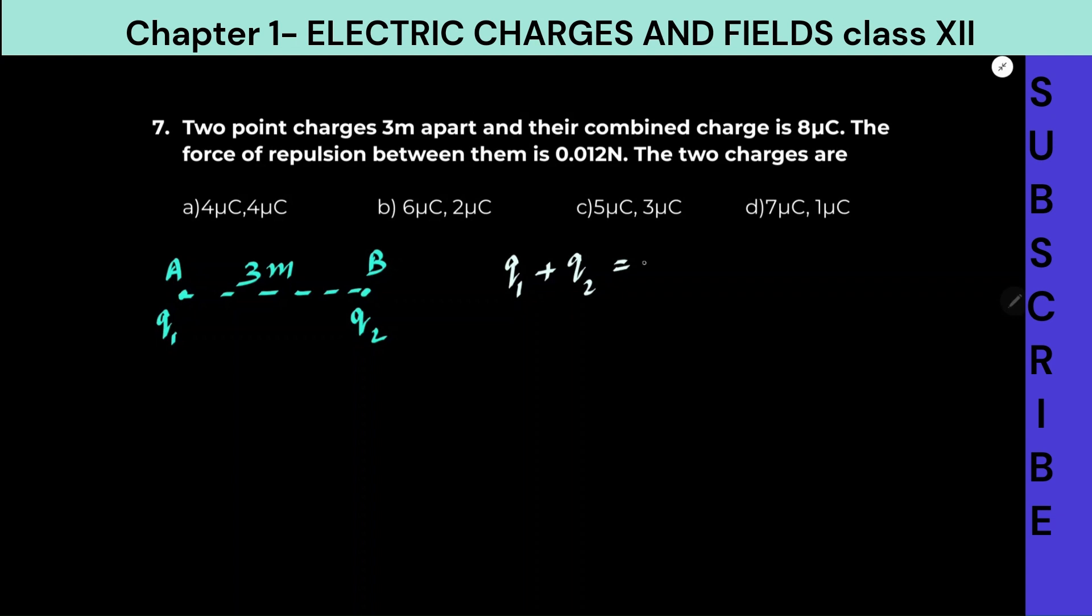And what is their combined charge as per the question? Q1 plus Q2 are given as 8 microcoulombs, 10 to the power minus 6 coulombs. The force of repulsion between them is given as 0.012 Newton. You have to find the charges.